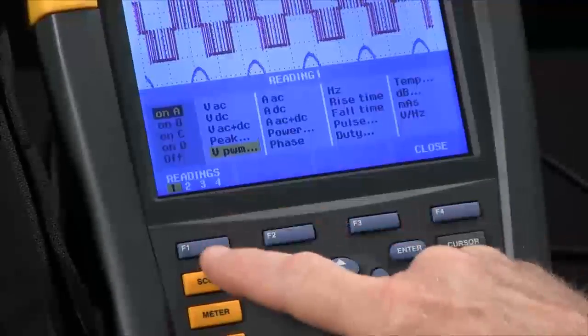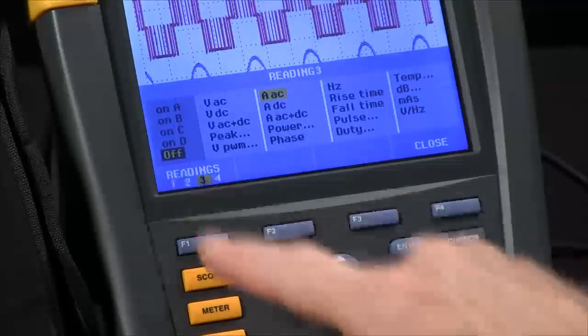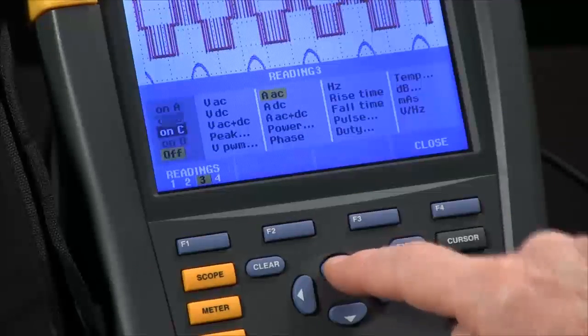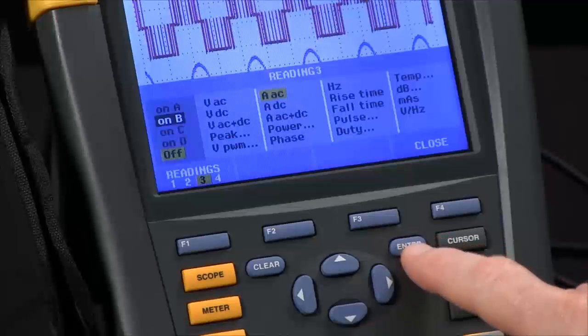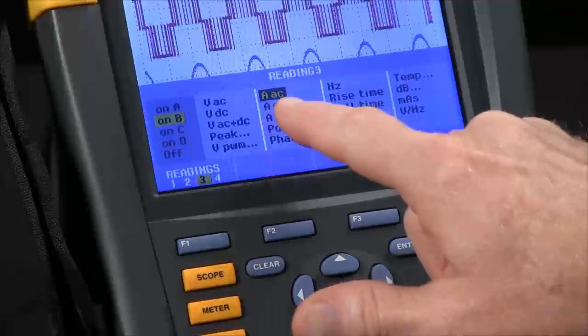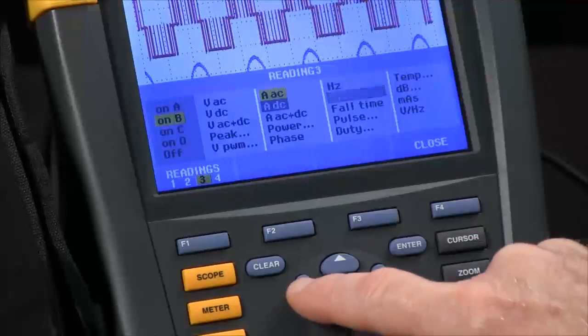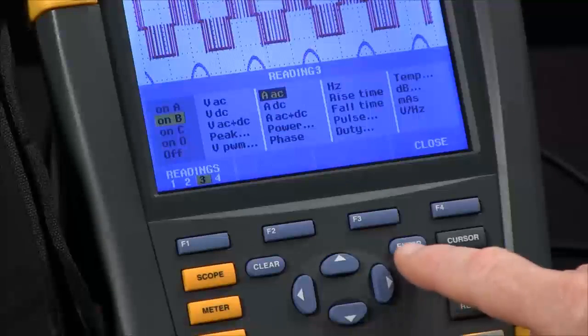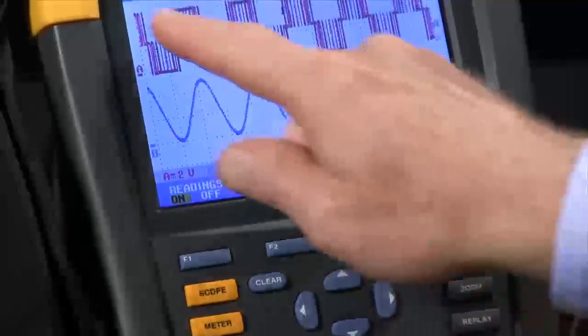We will highlight the number 3 with F1. Right now, it's off. We can arrow up, put it on channel B, hit the Enter key, and then change that to read whatever we like. In this case, we'll go with AMPS AC. We'll hit Enter. Now you can see three readings up here on the top of the screen.